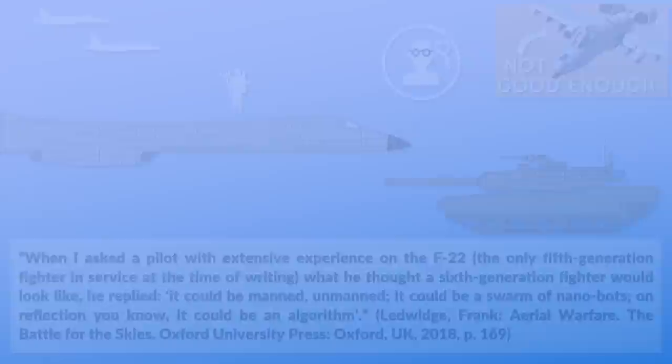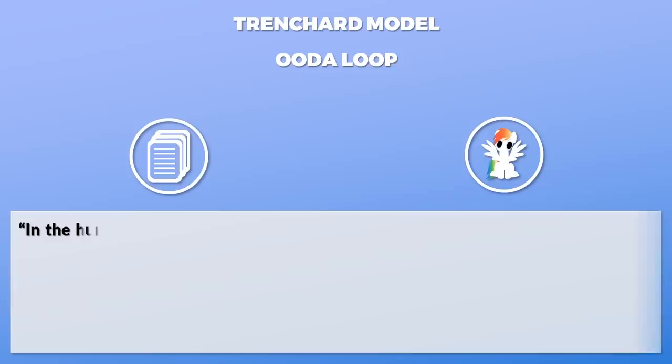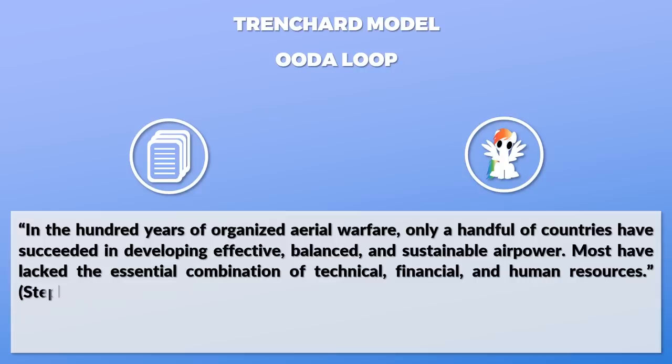Before summarizing, two important models need to be outlined: the Trenchard model and the OODA loop. Only a handful of countries have succeeded in developing effective, balanced, and sustainable air power in the 100 years of organized aerial warfare. Most have lacked the essential combination of technical, financial, and human resources. The central building blocks had already been defined in the 1920s by Hugh Trenchard, the Chief of Staff of the Royal Air Force.